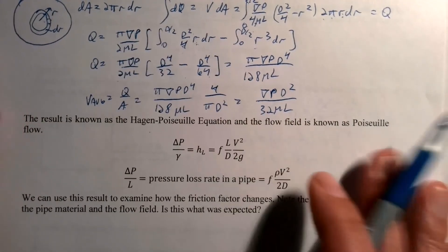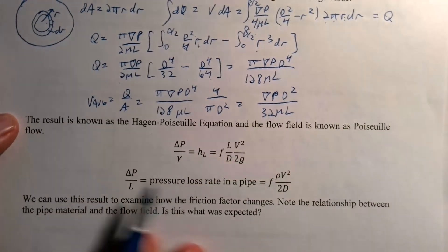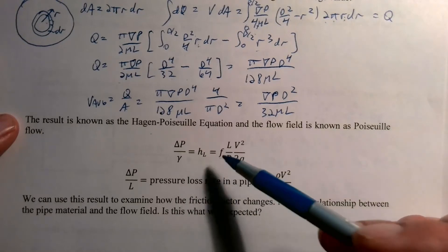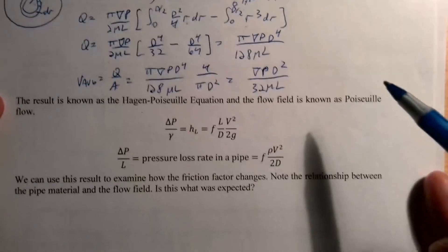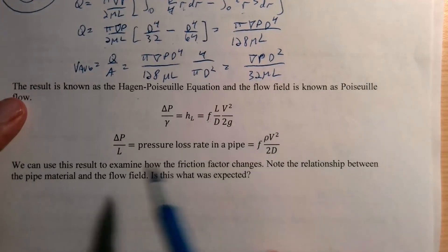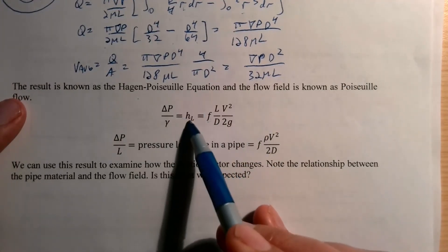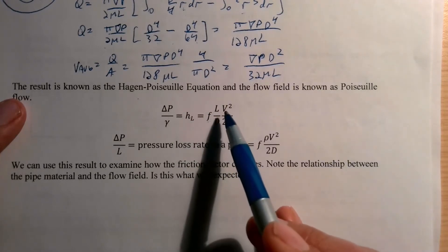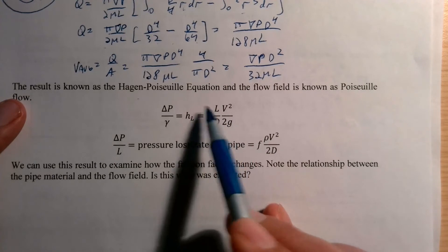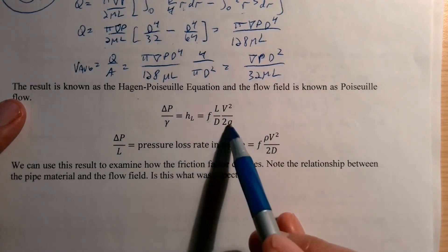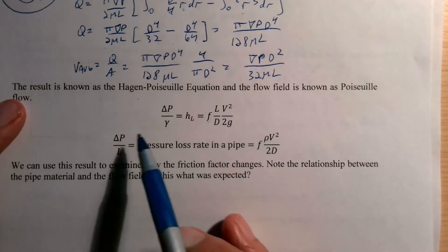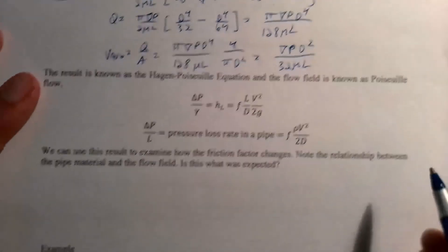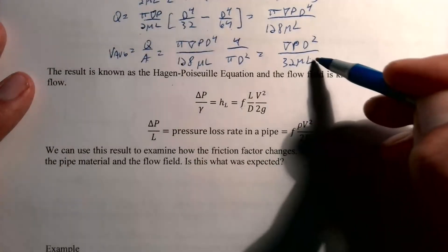Thinking back to our goal: we want the friction factor for the Darcy-Weisbach equation. We said ΔP/γ = f·(L/D)·(V²/2g), and since γ = ρg the g's cancel, leaving ΔP/L = f·ρV²/(2D).